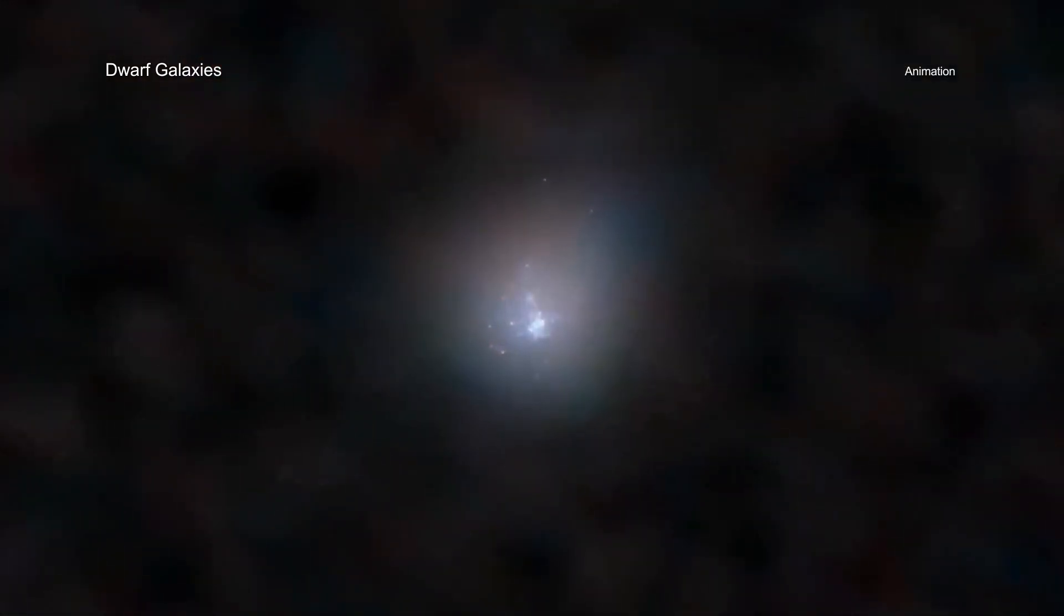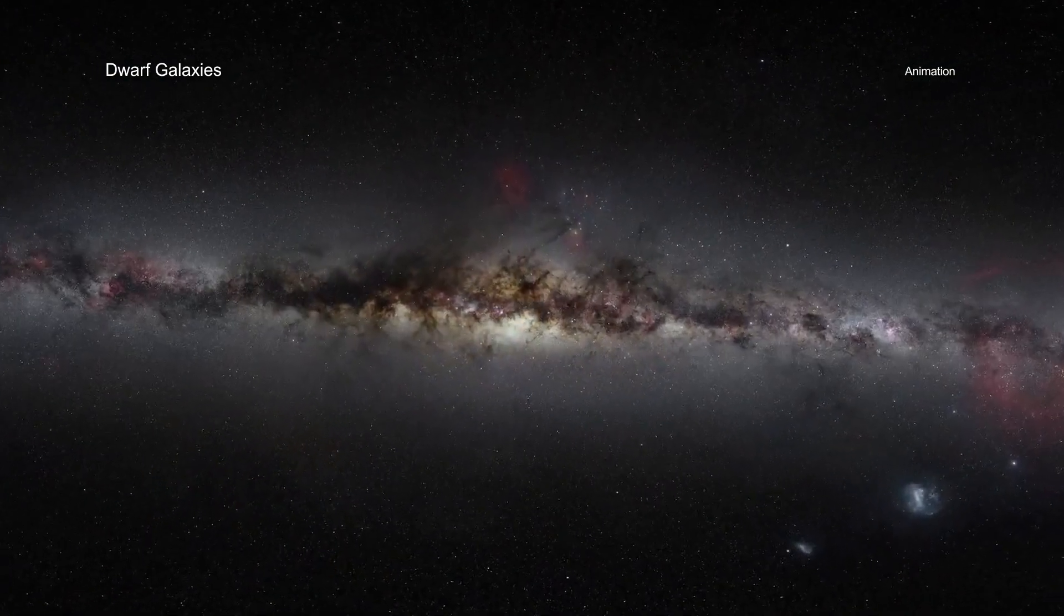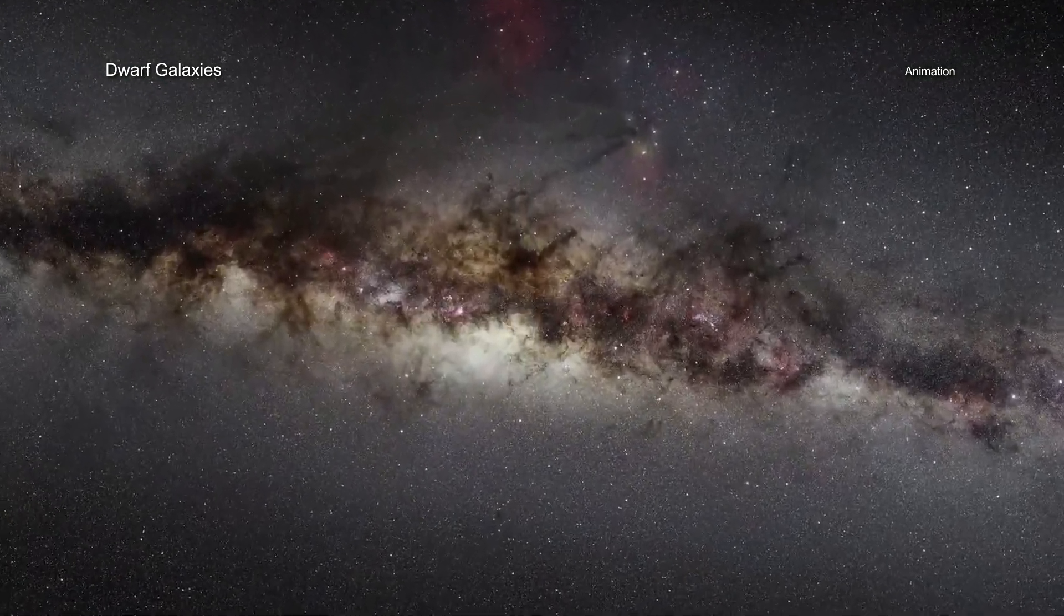Dwarf galaxies by definition contain stars with a total mass less than about 3 billion times that of the Sun, compared to a total mass of about 60 billion suns estimated for the Milky Way.